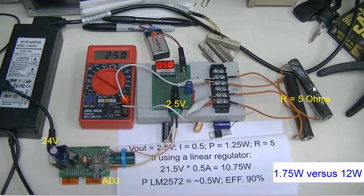What if I had used, in this case I'm dropping 21.5 volts. If I had used that linear voltage regulator, I would have been generating 10.75 watts worth of heat. Now look at it this way: 1.75 watts versus 12 watts. I'll take 1.75 watts. This is the case where less is best.